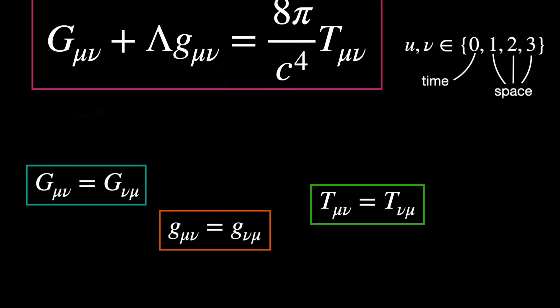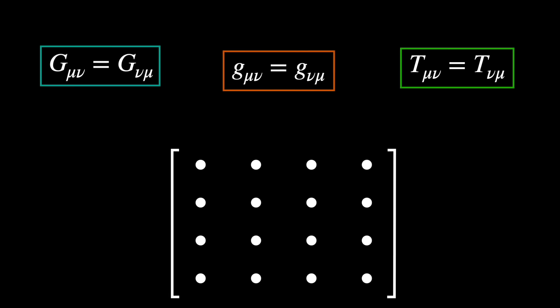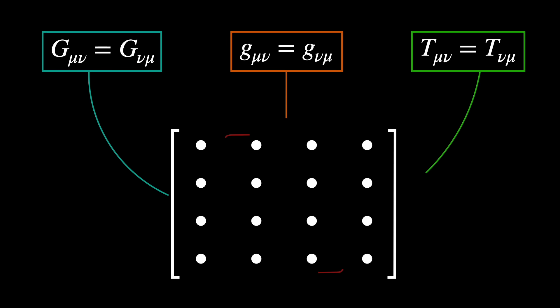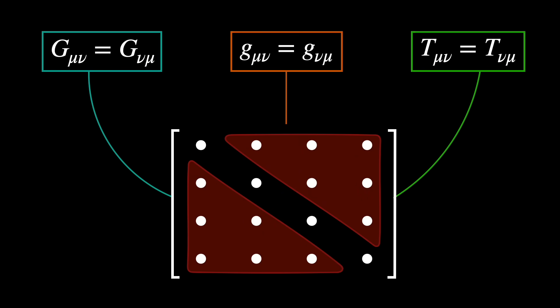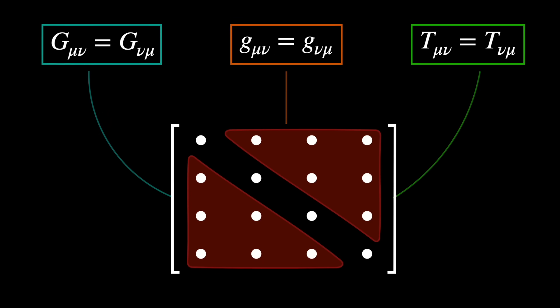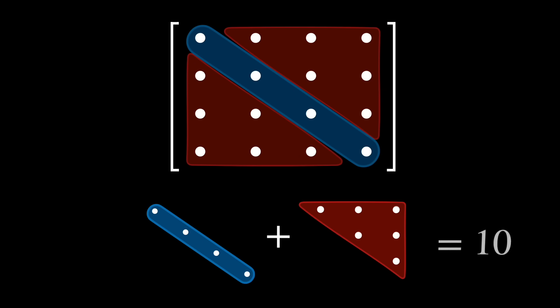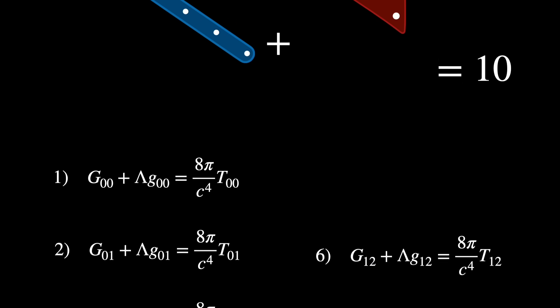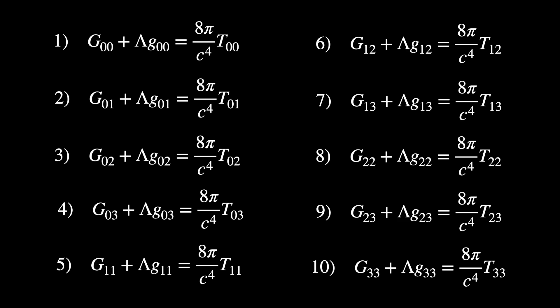This implies that in the matrix representation of these tensors, the components in each triangle are the same. So all we need to do is count the number of components inside one of the triangles plus the diagonal. Again, these are the 10 equations.